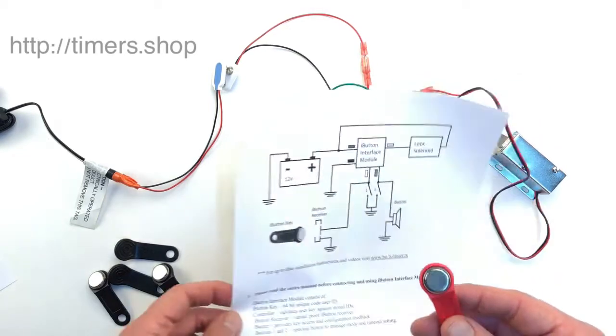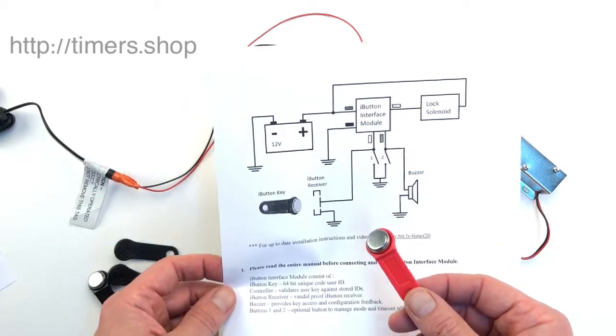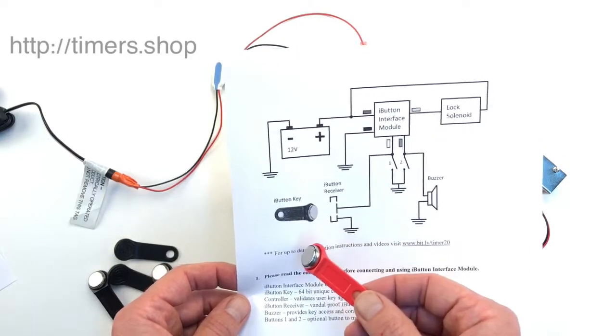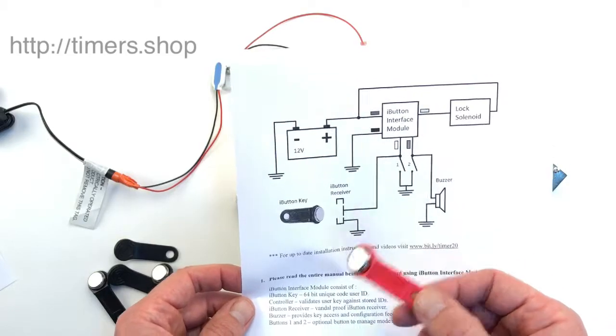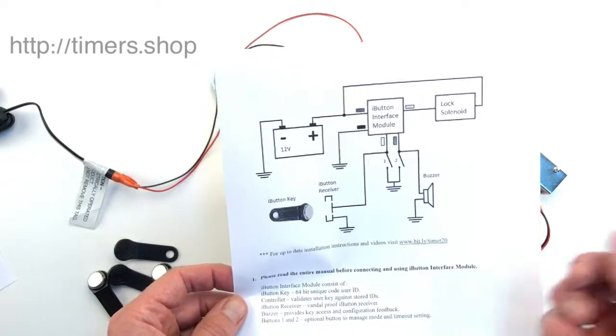We'll program the master key first, then use it to add multiple keys to the lock. The lock can keep track of 20 different keys, and you'll be able to add or remove keys.